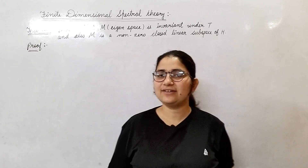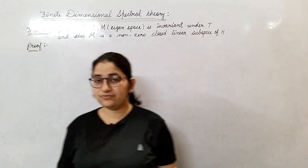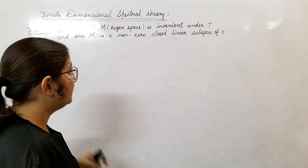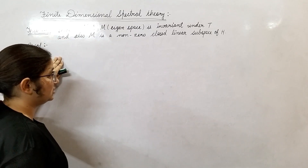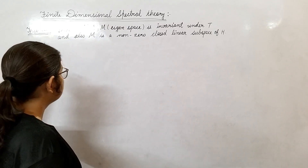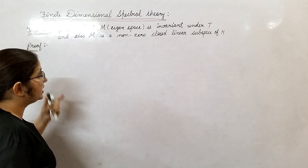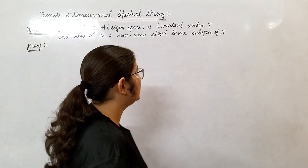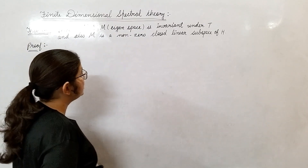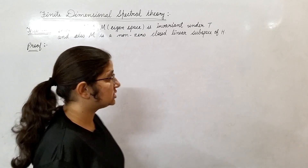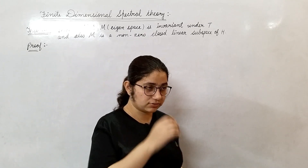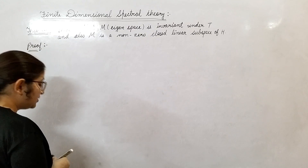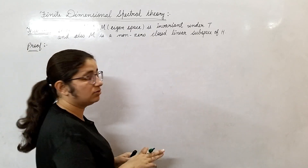Welcome back students. In finite dimensional spectral theory, we are going to show this result. What is this result? This result proves that the eigenspace is invariant under T, and M is a non-zero closed linear subspace of H. First of all, let's understand what 'non-zero' means here.